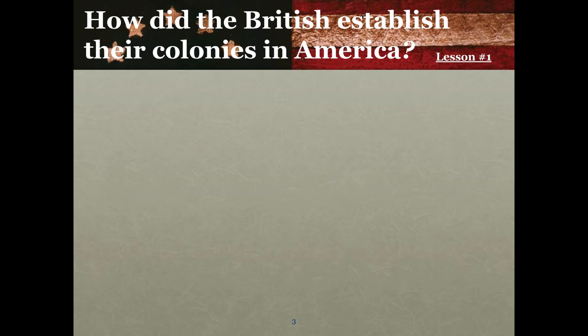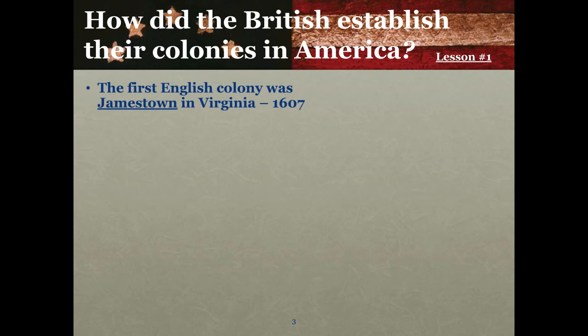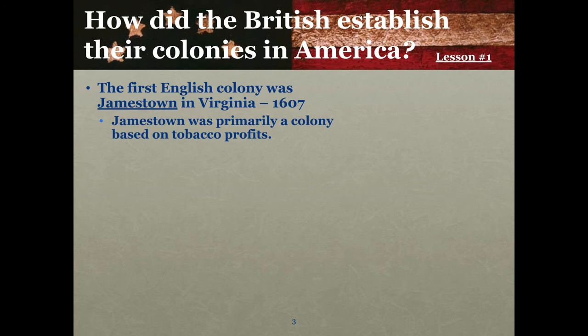Our first question on the left side of the line, as you take Cornell notes, is: how did the British establish their colonies in America? This is a very abbreviated lesson on what would be a much larger topic in a full-year class, but because this is a semester class we are going to do this very quickly. The first English colony that survived was Jamestown, established in what is now the state of Virginia, first established in 1607. Jamestown was established primarily as a colony to make money — the people who went there were looking to make money.